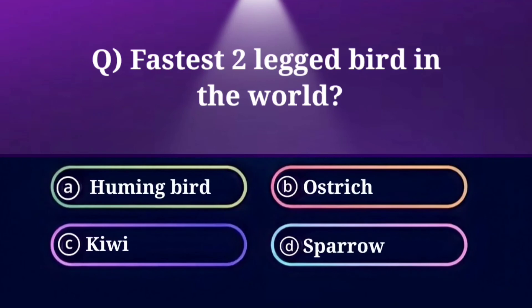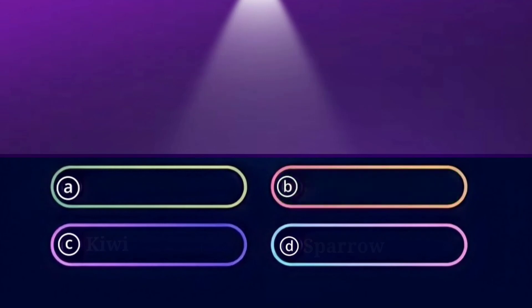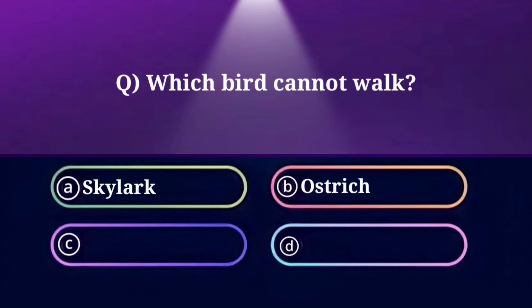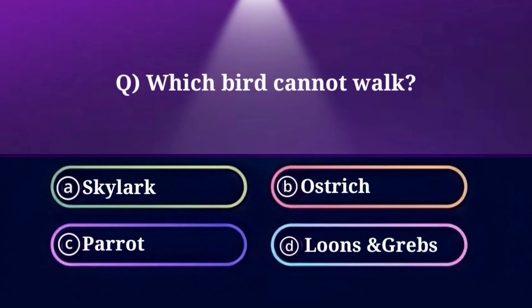Which bird cannot walk? Option A: Skylark, B: Ostrich, C: Parrot, D: Loons and Grebes. And the answer is Loons and Grebes.